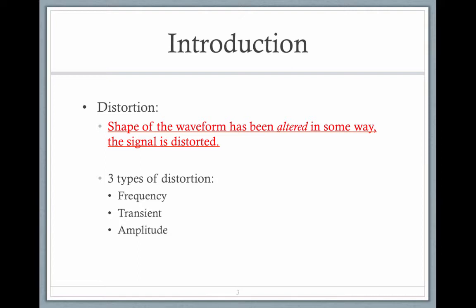There are three types of distortion: frequency distortion, transient, which also means time, and amplitude distortion.